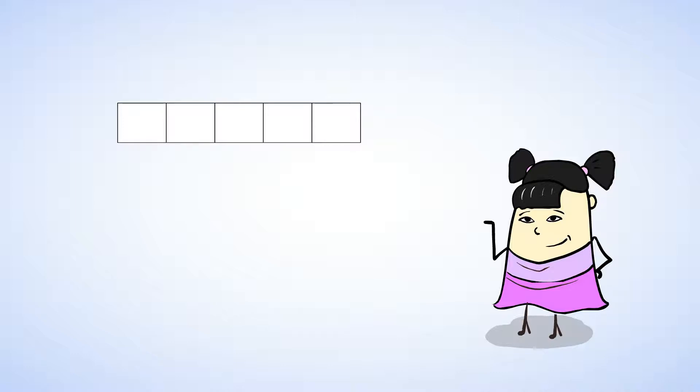But what if the five frame isn't full? Let's see. Get ready to take a look. And it's covered back up. I wasn't able to count all of the dots, but I know there was one empty box. So, that means there was one less than five. Four dots. Let's check. Yep. There were four dots in the frame.